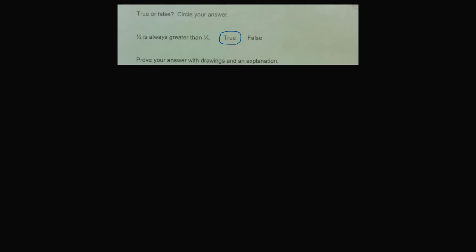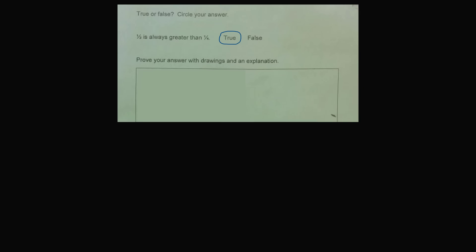Then, prove your answer with drawings and an explanation. So here's what the son did. He drew a circle and divided it right down the middle and shaded one part to illustrate one-half of the circle. He drew another circle of the same size and divided it into four equal pieces and shaded one of the four pieces to represent one-fourth.